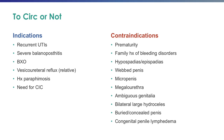In terms of evaluating a child for circumcision, indications for circumcision include recurrent urinary tract infections, severe balanopostitis, balanitis xerotica obliterans, vesicoureteral reflux as a relative indication, a history of paraphimosis, and a child that requires clean intermittent catheterization.